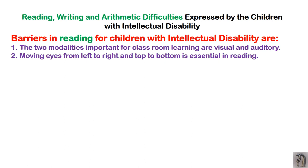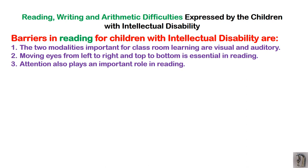When the child takes a textbook or notebook, make sure the child moves his eyes left to right and top to bottom. Attention also plays an important role in reading — if the child is not able to sit and focus on that particular activity, he cannot achieve. Children may also have irreversibility difficulties: for 'b' they will pronounce 'd,' for 'p' they may say 'q,' similarly 'u' for 'n' or 'w' for 'n.' These kinds of difficulties can be taught separately.